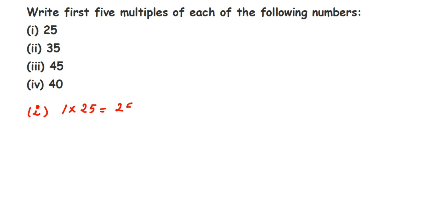So, 1 into 25 is 25. A multiple is something when you multiply that given number with 1, 2, 3, or any number - that will become the multiple. Now 2 into 25 is equal to 50.